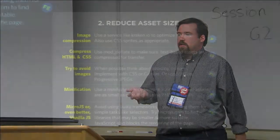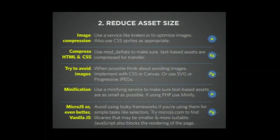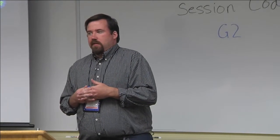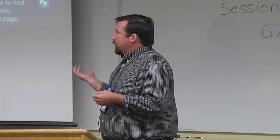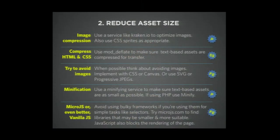For reducing asset size, image compression is the number one easiest thing you can do. Rather than saving at 70% quality in Photoshop, try 40% and see if it still works — that will probably cut half your image size. Also consider minification, and try to avoid bulky frameworks like jQuery, though jQuery 2 is more modular now. Look at microjs.com, which has small libraries that do single things very well. Learn vanilla JS — you can do selectors in vanilla JavaScript with one line instead of loading a 90K library.